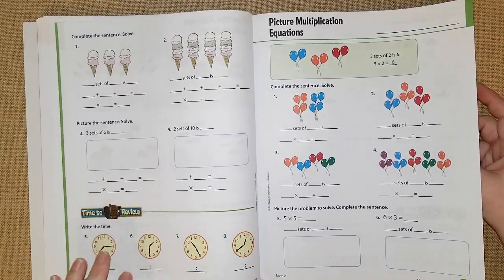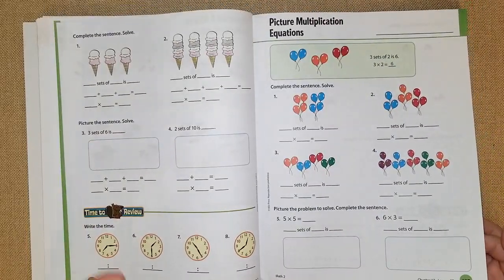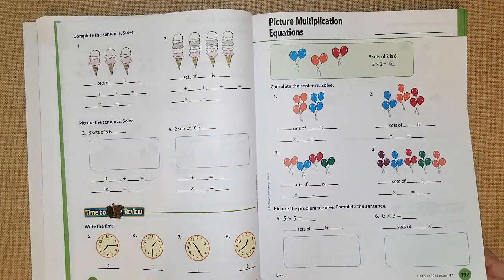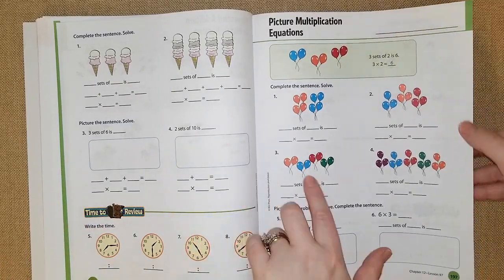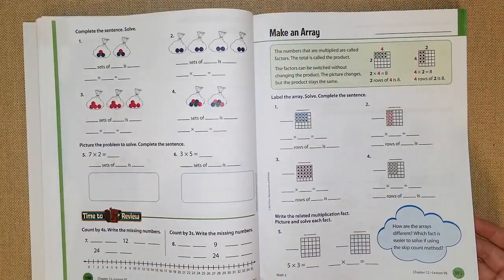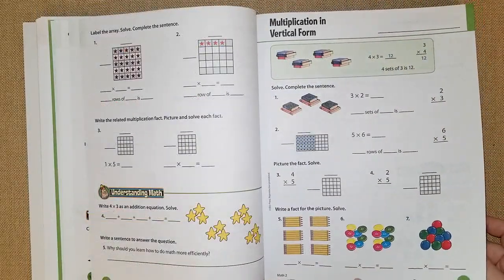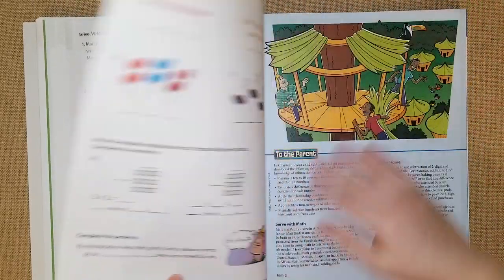So chapter 12 they're learning about multiplication and I like how they have it basically visually pleasing to the eye where they have balloons and sets of four and sets of threes and sets of twos, and then they could understand multiplication in an easier way. So multiplication in vertical form, problem solving, and then they have the review.